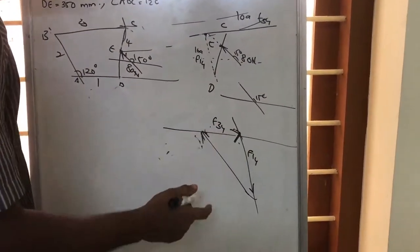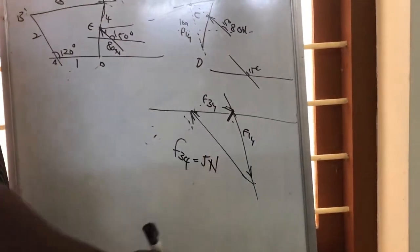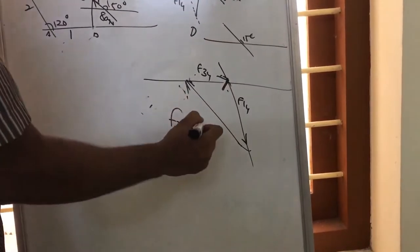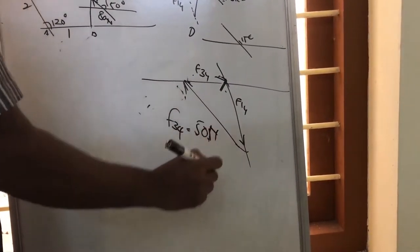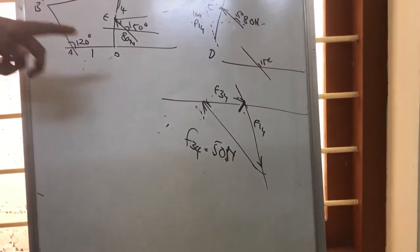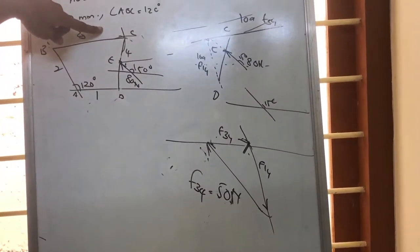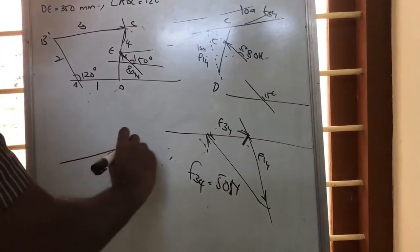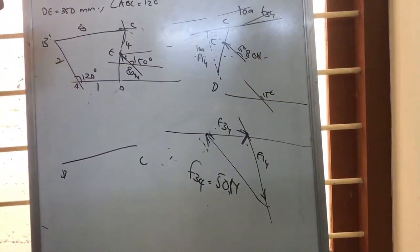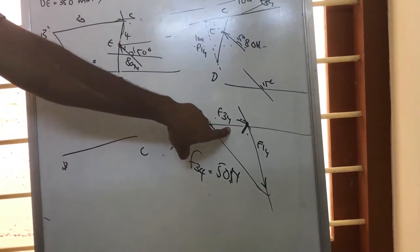By measuring F34 and F14 in the force diagram, suppose we get 5 centimeter for F34. Since 80 Newton was represented by 8 centimeter, F34 is 50 Newton. F34 is the force on link 4 exerted by link 3. If we are considering point C, then F43 — the force on link 3 exerted by link 4 — would be exactly opposite to F34.